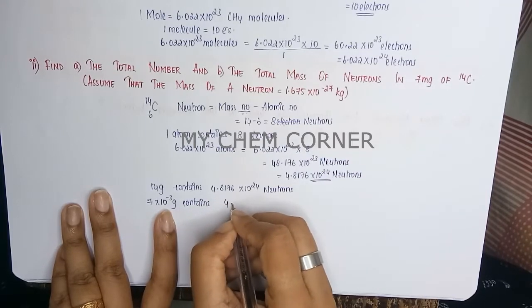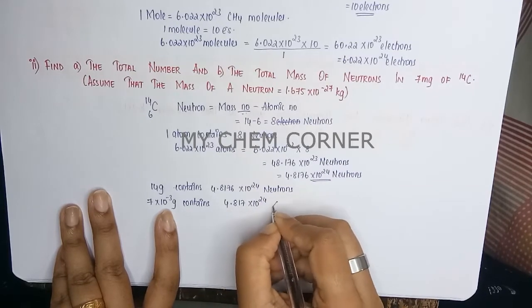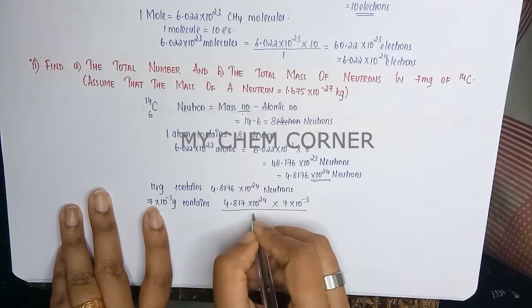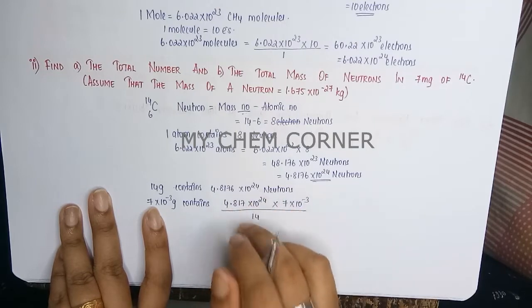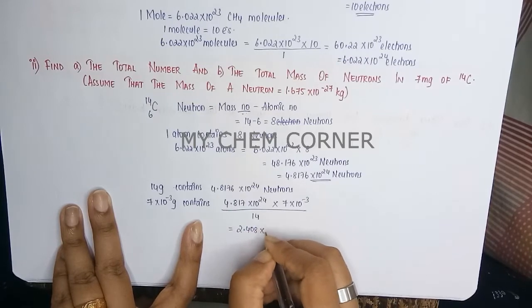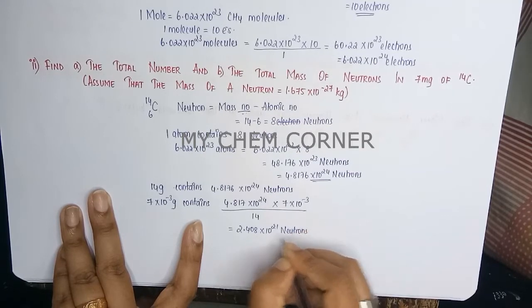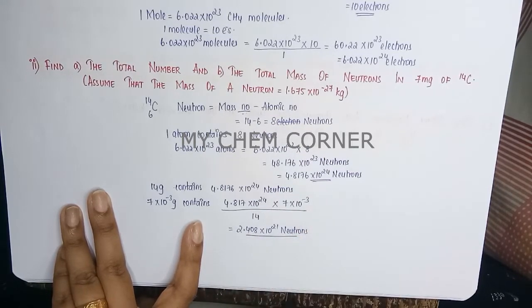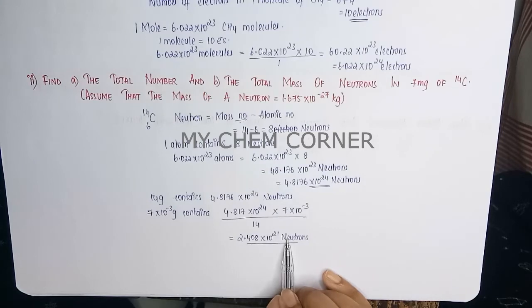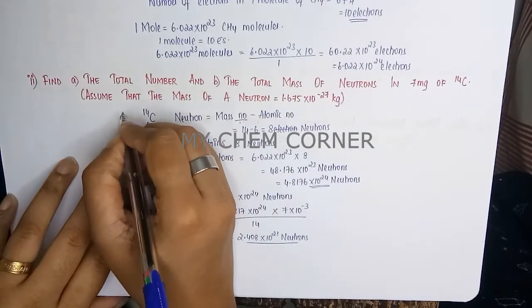Just cross multiply them: 4.817 times 10 to the power 24 times 7 times 10 to the power minus 3 divided by 14. When we simplify this entirely, we will get 2.408 times 10 to the power 21 neutrons. So this here is the answer for part A, which asks for the total number of neutrons.